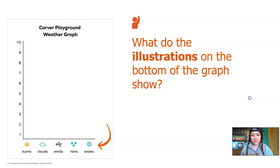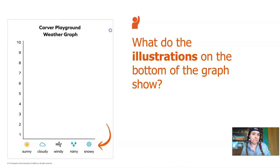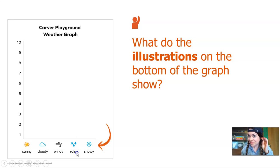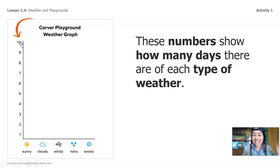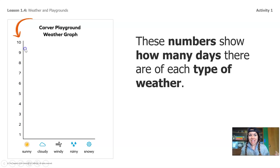Let's check out the parts of the graph. At the top, it says Carver Playground Weather Graph — that's the title of the graph, and it tells us what the graph is about, just like the title of a book. Now check out these pictures across the bottom — those are all of the different weather conditions we learned about. And check out these numbers going up the side of the graph. It starts at number one and goes up to ten. These numbers show how many days there are of each type of weather.